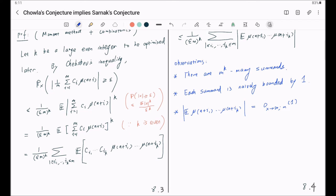This holds as long as at least one of the indices i_1 through i_K occurs an odd number of times. So, if at least one of the indices i_1 through i_K occurs an odd number of times, we have this estimate for the summand.